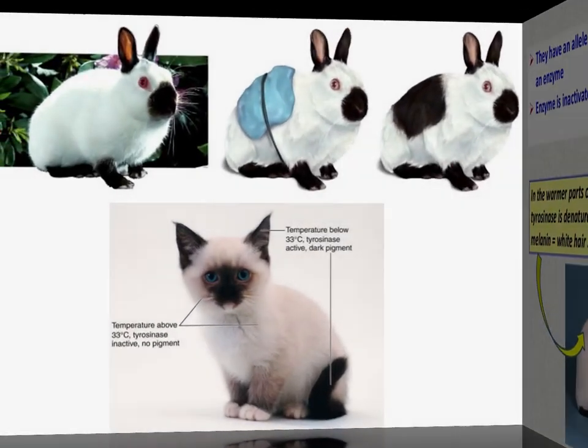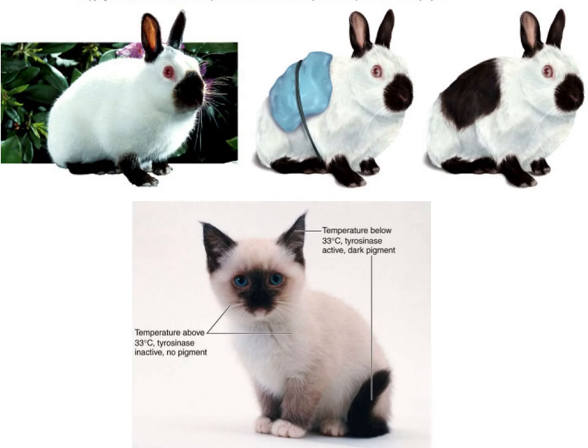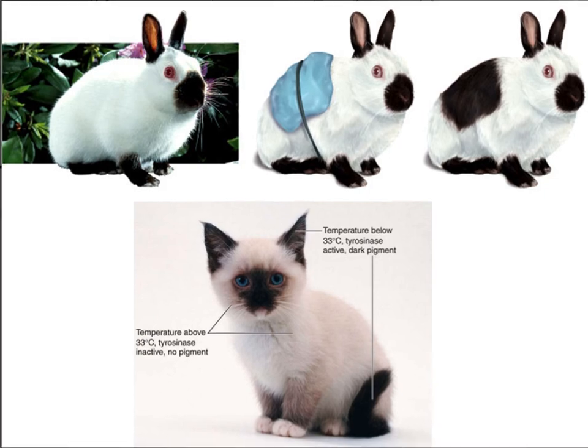There have been experiments where you strap a cold pack to the back of a rabbit for a couple of weeks, and dark fur forms in a patch on the back — you could essentially give your bunny a hair tattoo by strapping cold things to it. Here's a cat showing the same thing: the colder parts — ears, nose, tail — all produce that dark pigment. It's pretty cool.